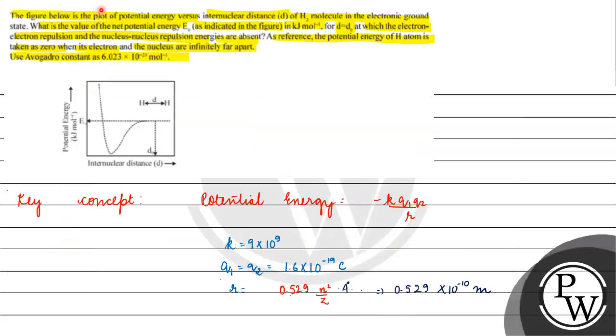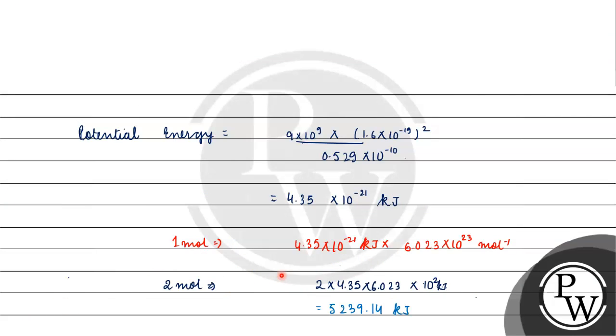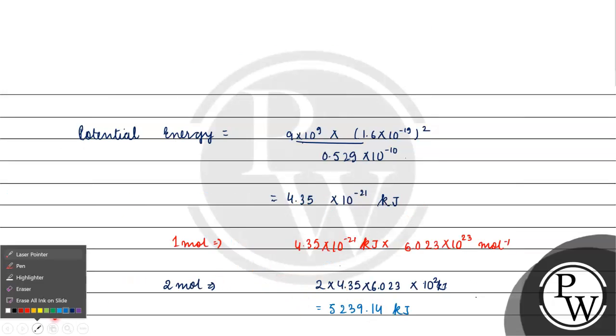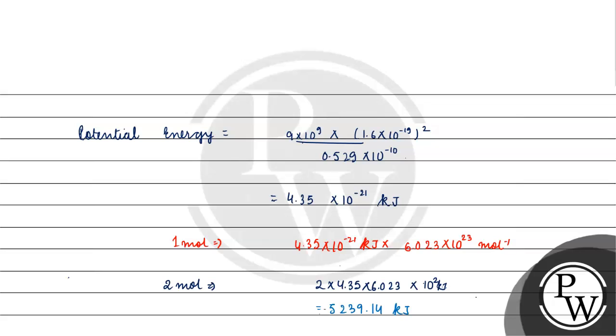What did we do in this question? Plot of potential energy versus inter-nuclear distance was given. We had to find net potential energy. We used the formula of potential energy and calculated it. This will be the final answer for this question. I hope you understood it well. Thank you and all the best.